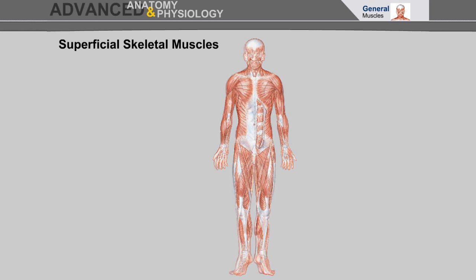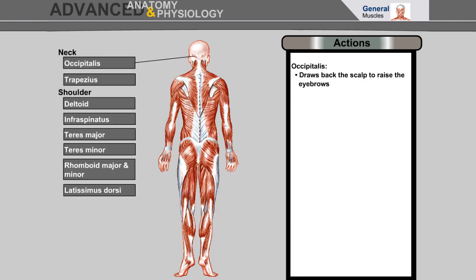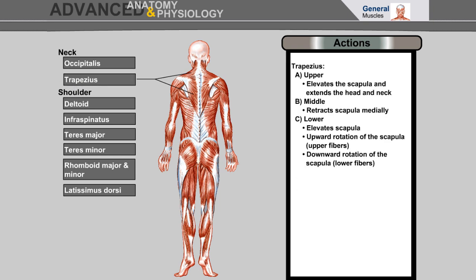Superficial skeletal muscles — let's review each muscle to see its location and read about the action it performs. Occipitalis draws back the scalp to raise the eyebrows. Trapezius upper elevates the scapula and extends the head and neck; middle retracts the scapula medially; and lower elevates scapula, upward rotation of the scapula, and downward rotation of the scapula.